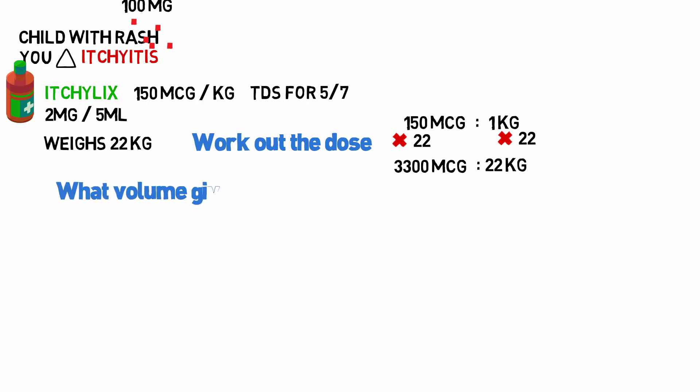Next, what volume gives this actual dose? So we know that two milligrams is in five mils of itchilix. But before we go any further, notice that the itchilix is in milligrams, and what we just worked out is in micrograms. Now, you can't mix these units together. They either both have to be in micrograms or both have to be in milligrams. In this example, we're going to convert the two milligrams into micrograms. So 2000 micrograms in five mils.